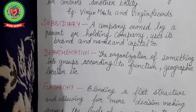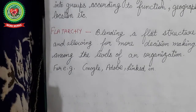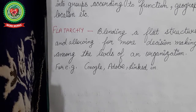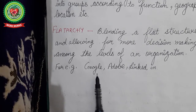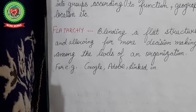Next key term is flat-archi — blending a flat structure and allowing more decision-making among different levels of the organization. Flat-archi is a flat structure where you can have more divisions for decision-making among top, middle, and lower levels of organization. For example, flat-archi is followed in Google, Adobe, and LinkedIn.